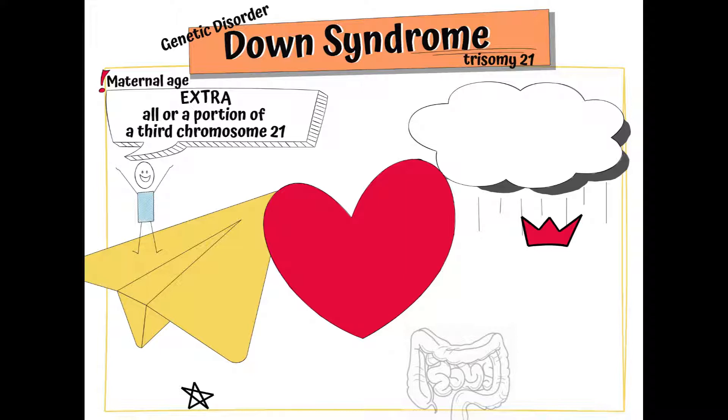The presence of all or part of the third copy of chromosome 21 causes Down syndrome, the most common chromosomal abnormality in humans.